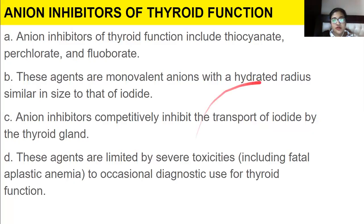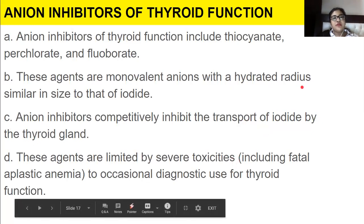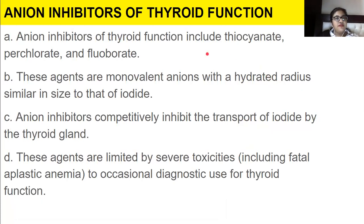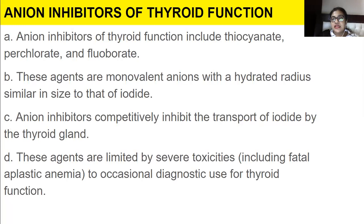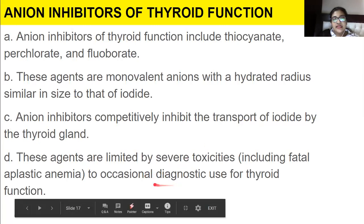Anti-thyroid drugs include anion inhibitors of thyroid function. These agents are monovalent anions with a hydrated radius similar in size to iodide. They competitively inhibit transport of iodide by the thyroid gland. These agents are limited by severe toxicities including fatal aplastic anemia, and are restricted to occasional diagnostic use for assessing thyroid function.